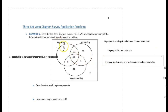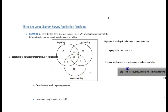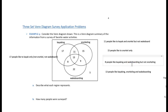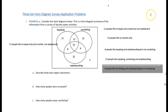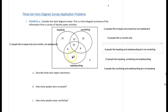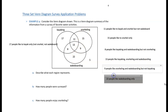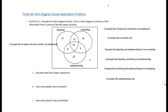The 13 in the very center is within all three sets — kayaking, snorkeling, and wakeboarding — so those are 13 people that like all three water activities. The 9 on the right are inside snorkeling and wakeboarding but outside kayaking, so they like snorkeling and wakeboarding but not kayaking. The 22 is wakeboarding only, and the 5 is outside all three sets — those people do not like kayaking, snorkeling, or wakeboarding.